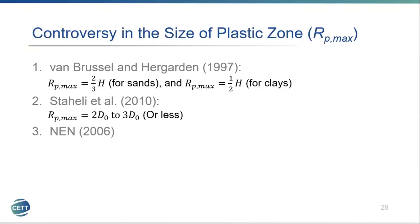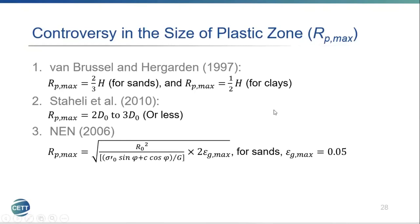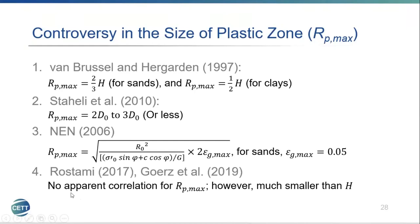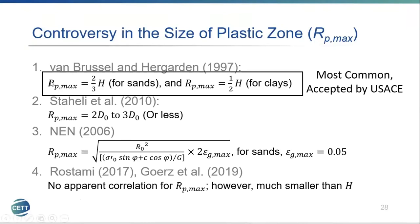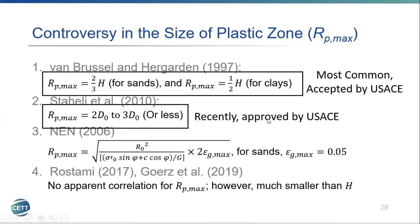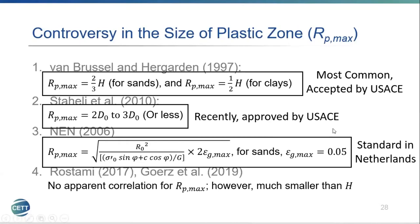The size of the plastic zone, denoted as RPmax, should be two-thirds of the depth of cover for sand and one-half for clays. Stahili et al. said the plastic zone may be two to three times the initial bore diameter. The NEN standard from the Netherlands uses a maximum allowable strain of 5%, which seems like a quite large assumption. Rostami and Gores et al. found RPmax has to be much smaller than H, but did not find an apparent correlation between the two.